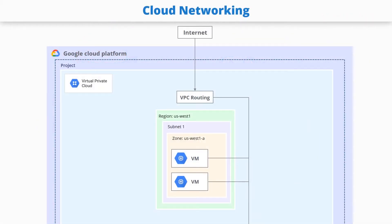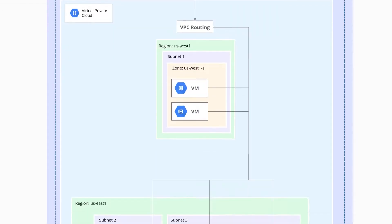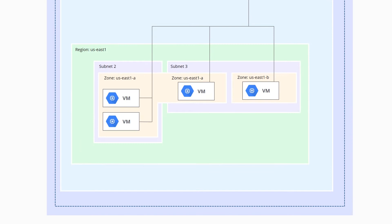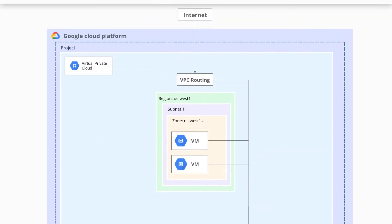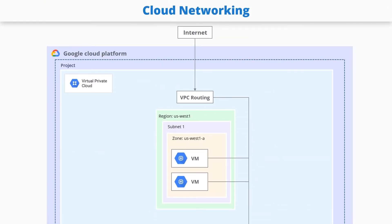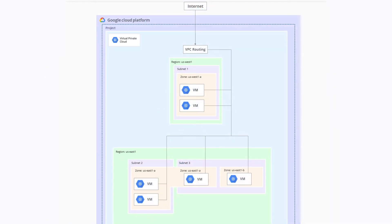Let's now discuss Virtual Private Cloud and Virtual Private Network. Virtual Private Cloud provides networking functionality to Compute Engine virtual machine instances, Google Kubernetes Engine containers, and the App Engine flexible environment.